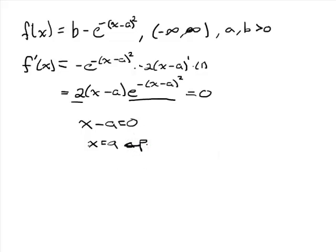Now we want to see what's happening at this critical point. So we evaluate our function at the critical point, and we get b - e^(-(a-a)²).